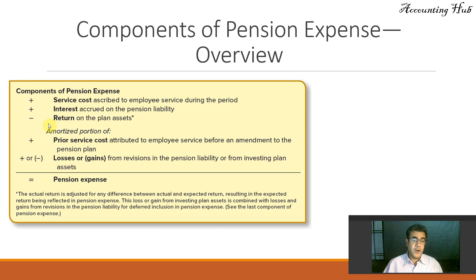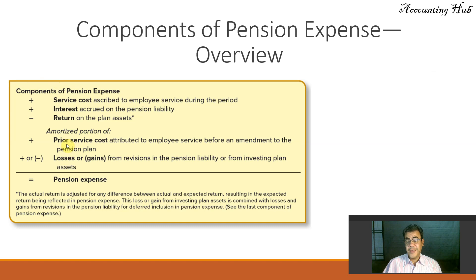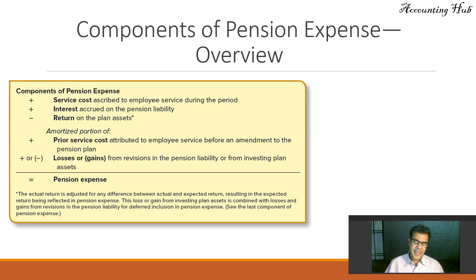On the other hand, prior service costs and gains or losses are other comprehensive income. We have a video about prior service costs and a video about gains and losses — they are also in our video description. These items are other comprehensive income, so we need to amortize them, but that is not our focus today.